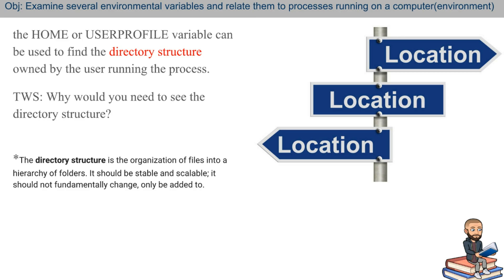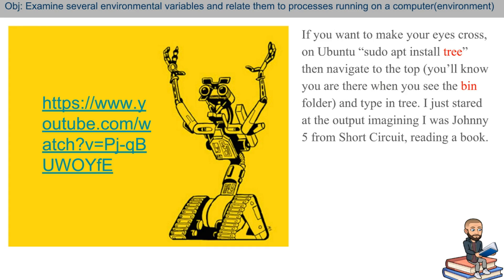Another variable is like the home or user profile variable. Whoever's running the process, that is like whoever's logged in, that is going to be their home variable. And you could look at the directory structure of that user. The directory structure is the organization of files into a hierarchy of folders, and it should be stable and scalable. It should not fundamentally change or be added to.